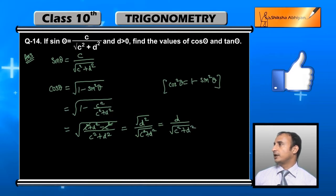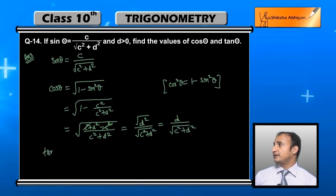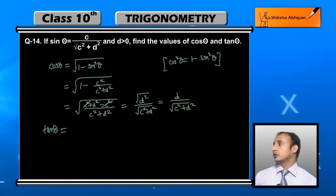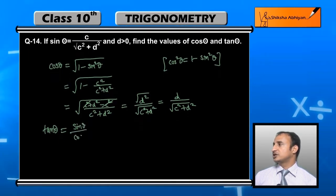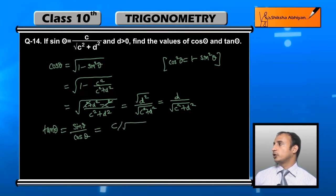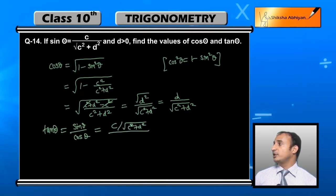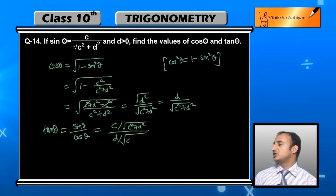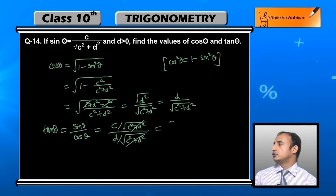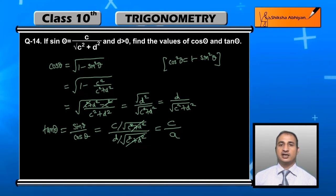Now to find tan θ, I can write tan θ = sin θ / cos θ. The value of sin θ is c / √(c² + d²) and the value of cos θ we just found is d / √(c² + d²). The √(c² + d²) cancels out, so tan θ = c / d.